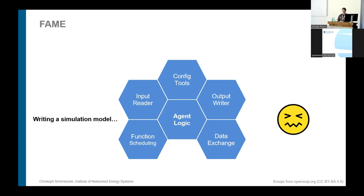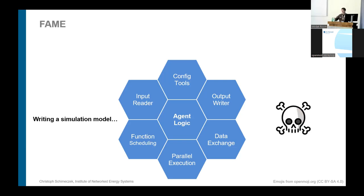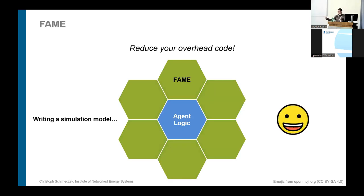Once you have your simulation, you find out it's really slow and you need to do parallelization — and you need to know a lot about parallelization. To avoid all of this, we have FAME: a framework that encapsulates all of these tasks and lets you focus on the agent logic and be a happy simulation programmer.